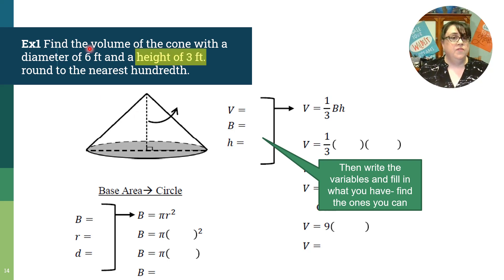Right in here, find the volume of the cone with a diameter of six feet and a height of three feet and round to the nearest hundredth. So right here I see that I have a height of three feet. I can put it onto my diagram and I can fill it in here. This helps me get ready for my problem and then I notice that I need the base area. Now nothing here tells me the base area, which means I need to go do a smaller sub problem.